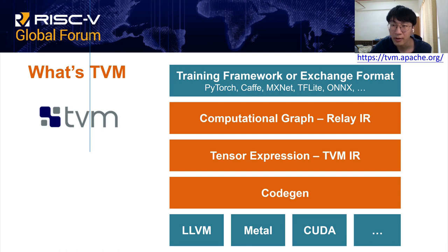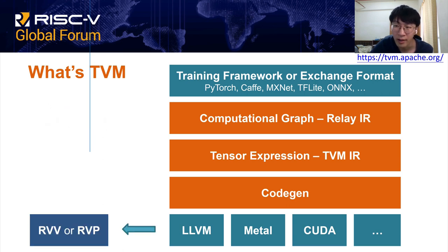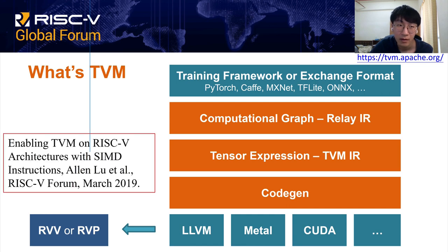First, I'll give a quick look at TVM. It is an open deep learning compiler that can optimize and compile models from different sources, such as PyTorch, Keras, MXNet, TensorFlow Lite, or ONNX. After several stages of optimization, it can output for different backends, including LLVM IR. For our work, we output the LLVM IR and handle it in the LLVM that we maintain for RISC-V V or P-extension. Our team has already worked on this flow for around a year, so this work is basically based on our previous work.